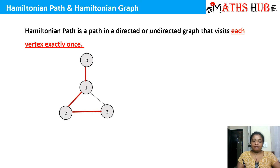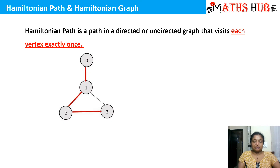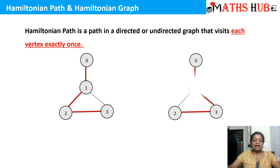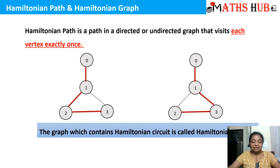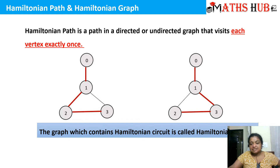Let's see this graph. The path marked with a bold red line is a Hamiltonian path — you need to cover all the vertices. You can travel from 0 to 1, 1 to 2, and then 2 to 3; all vertices are covered. Another Hamiltonian path can be 0 to 1, 1 to 3, and then 3 to 2. When talking about a Hamiltonian circuit, the initial and final vertices must be the same.